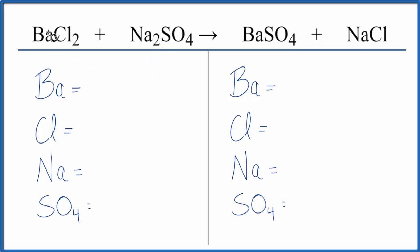Let's count the atoms up on each side of the equation. Barium, we have one, two chlorines, two sodiums, and then SO4.